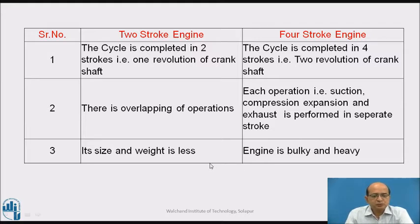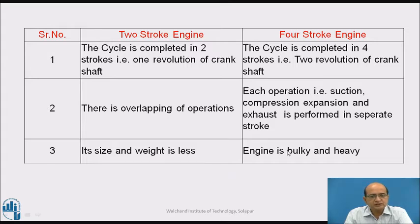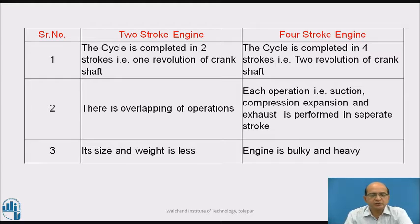The next point of comparison is the size and weight required for two-stroke or four-stroke engines. The size and weight is less for the two-stroke engine, whereas the size and weight increases in case of the four-stroke engine. That's why the engine is bulky in case of the four-stroke engine, because the number of parts required — valves, valving system, etc. — is increased.